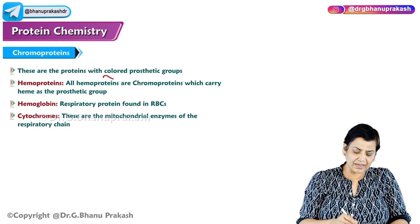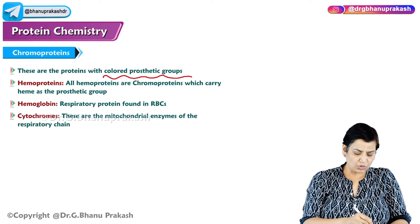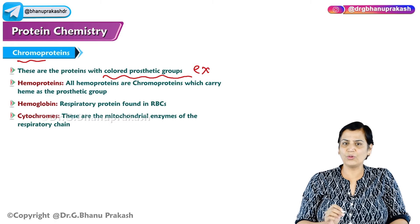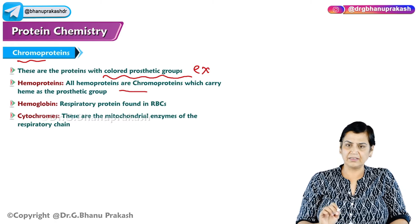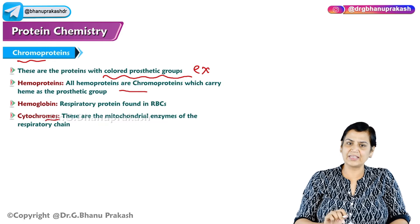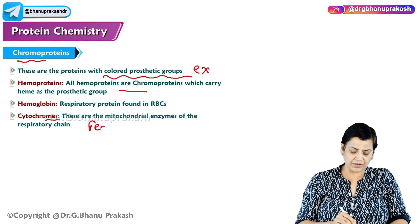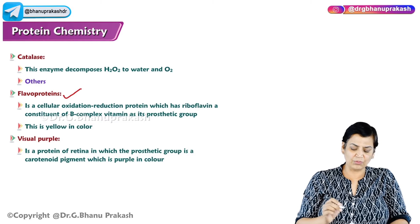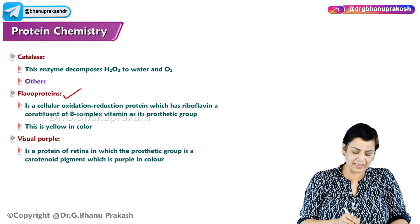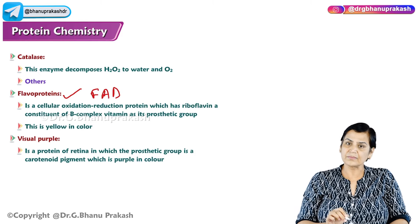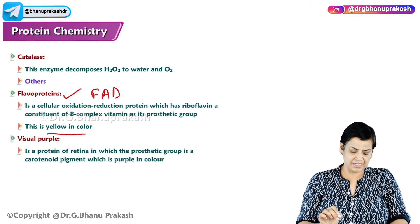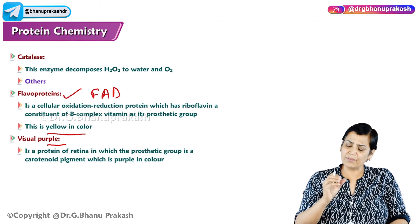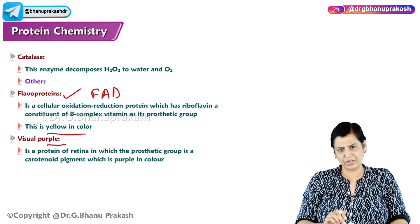Chromoproteins are the colored proteins. For example, hemoglobin is colored. Cytochromes are also chromoproteins — they contain iron-sulfur proteins. Flavoproteins contain FAD and have a yellow color. Visual purple (rhodopsin) is another example. In all these conjugate proteins, there is a protein part and a non-protein part.